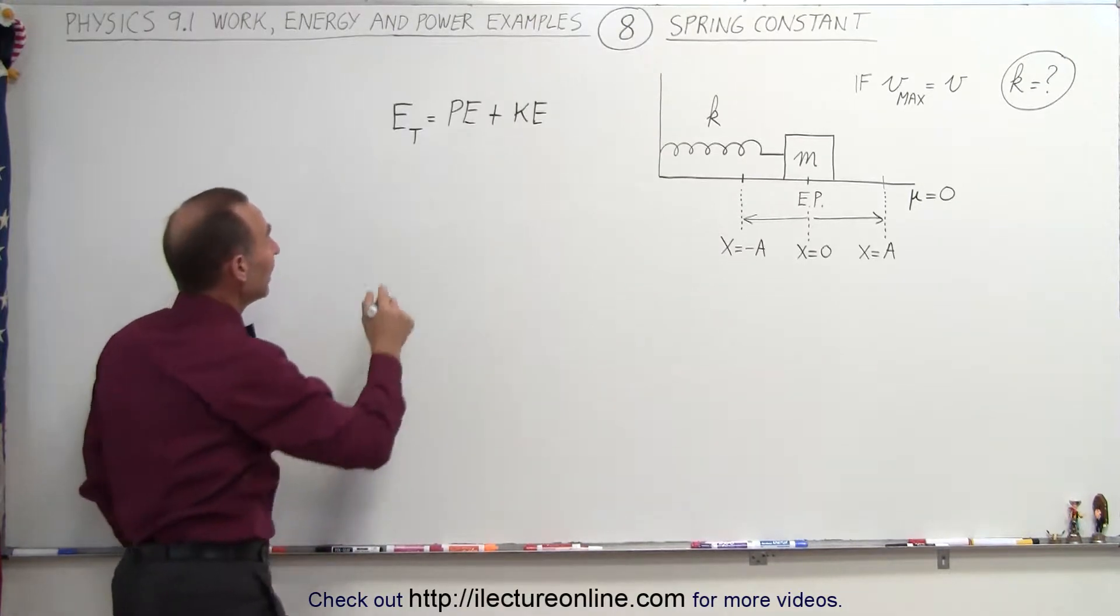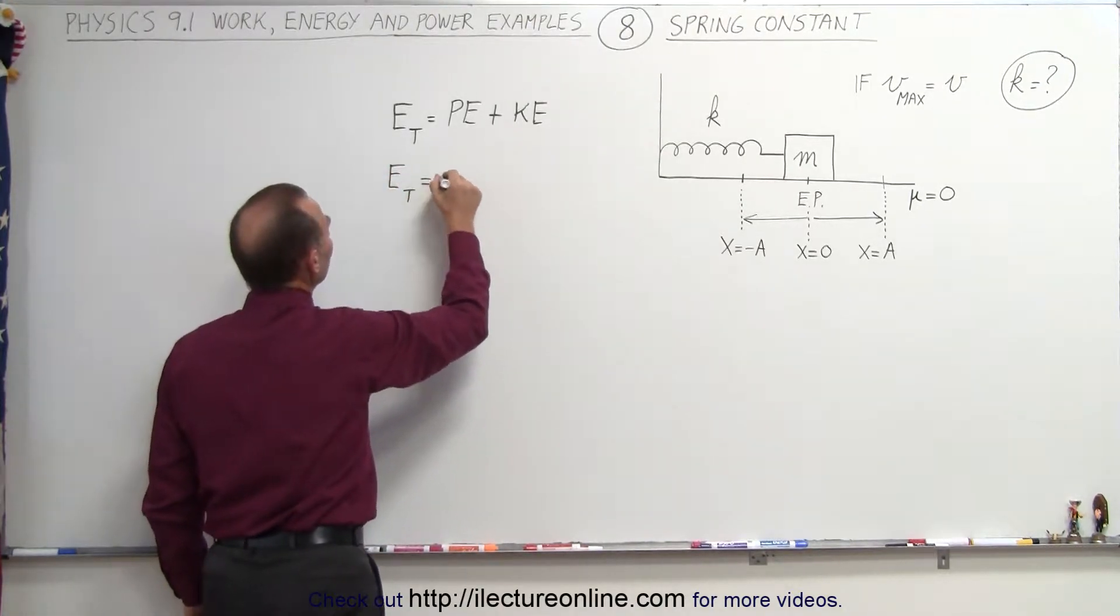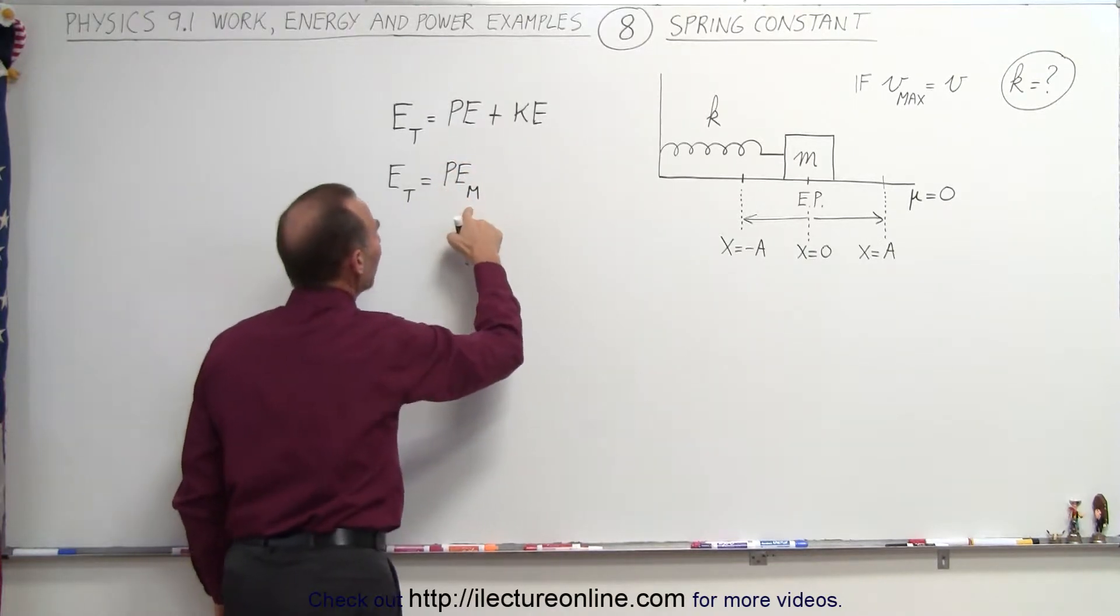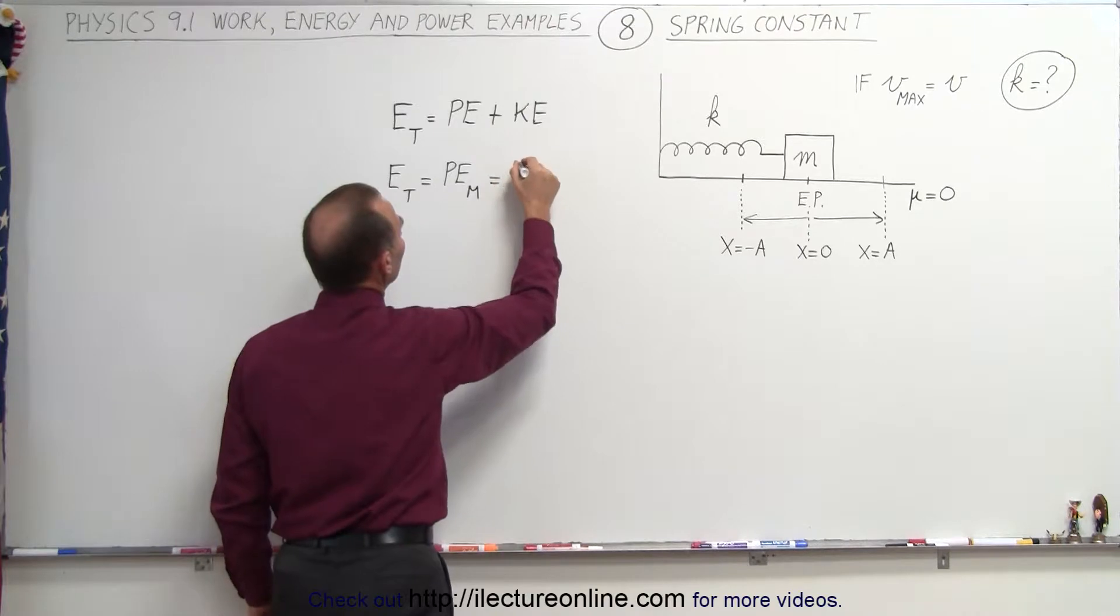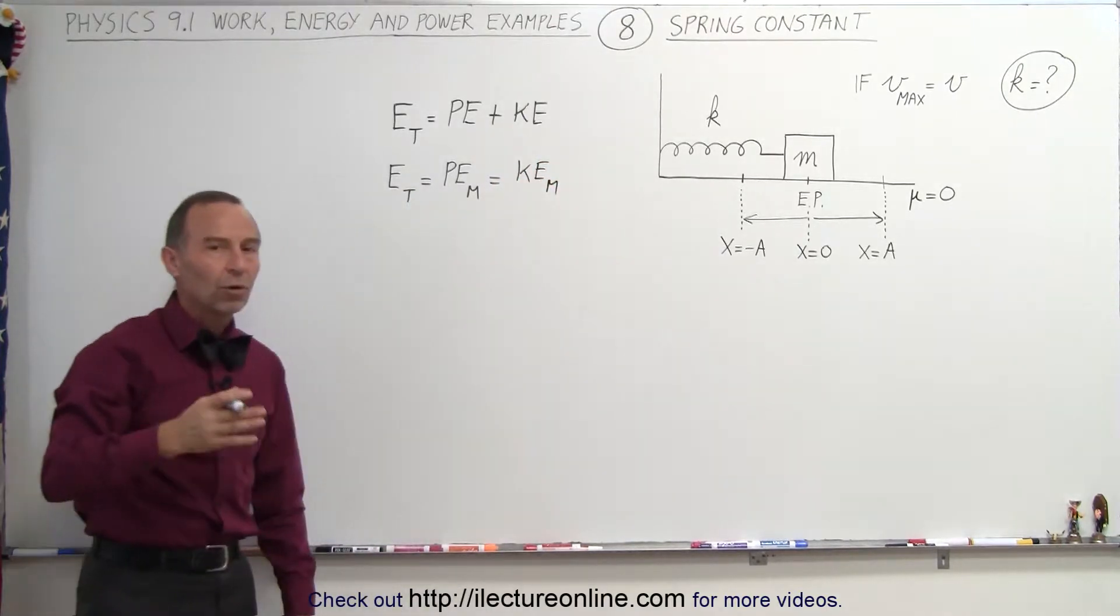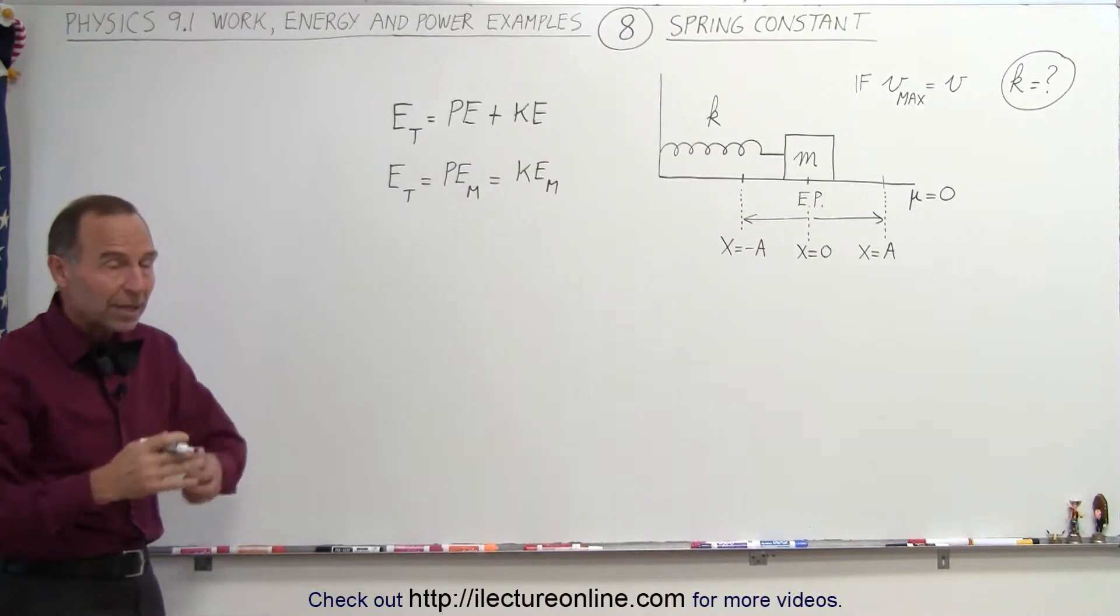What we can also say is that the total energy of the system is going to be equal to the maximum potential energy, which we'll write as PE sub m for max, which is also equal to the maximum kinetic energy. So either we have all potential energy, or all kinetic energy, or some combination of the two.